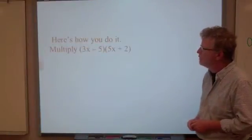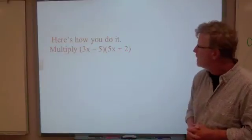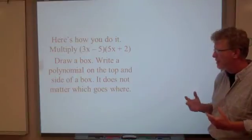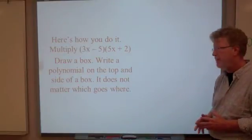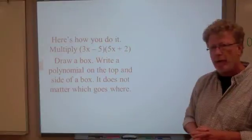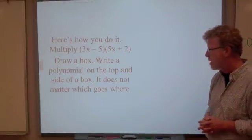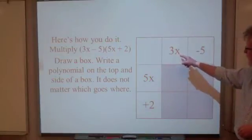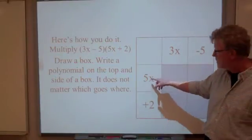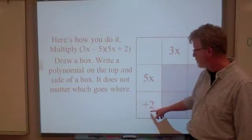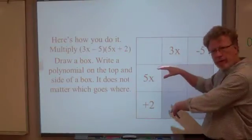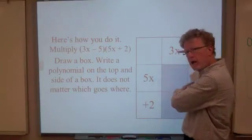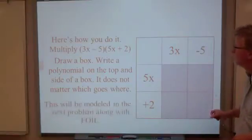Alright, so here's what you have to do. First of all, we're going to multiply 3x minus 5 times 5x plus 2. First thing we're going to do after that, we've got our problem identified. Now we're going to draw a box and we're going to write a polynomial on the top and side of the box. It doesn't matter which one goes where. Here, I have my 3x and my negative 5 and down on the side I've got the 5x and the 2. Once again, it wouldn't matter where I put them as long as I kept the terms from each polynomial the same, either top or side.